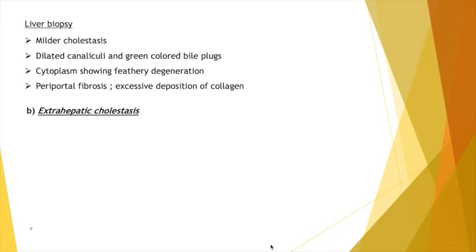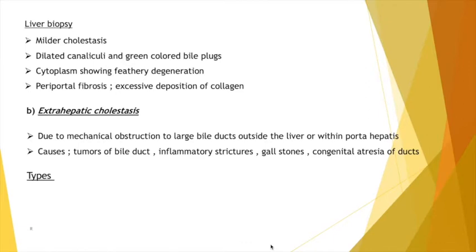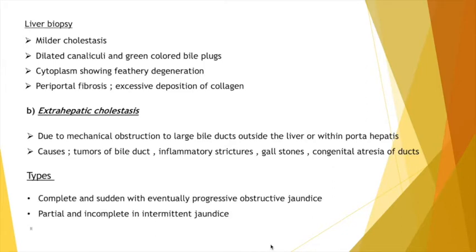Next is extrahepatic cholestasis. It is due to mechanical obstruction of large bile ducts outside the liver or within the porta hepatis. Causes include tumors of the bile duct, inflammatory strictures, gallstones, and congenital atresia of ducts. There are two types: complete and sudden obstruction with eventually progressive obstructive jaundice, and partial or incomplete obstruction with intermittent jaundice.